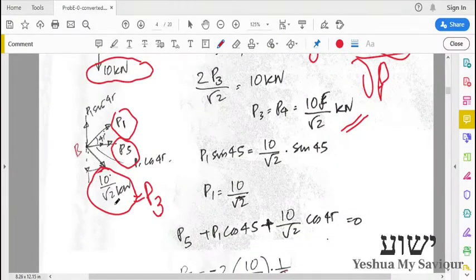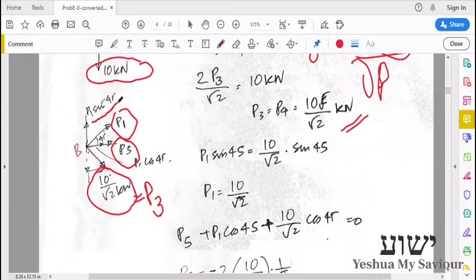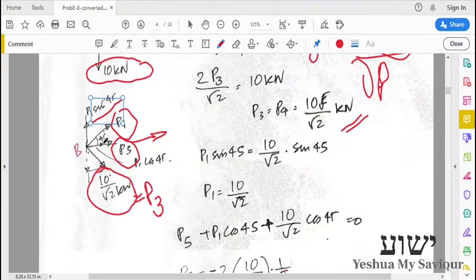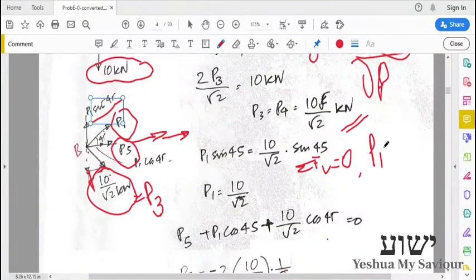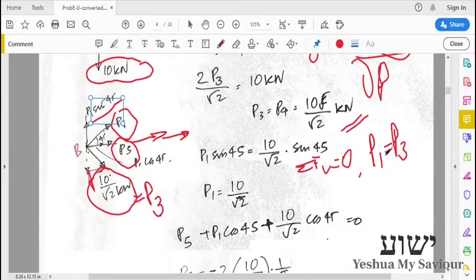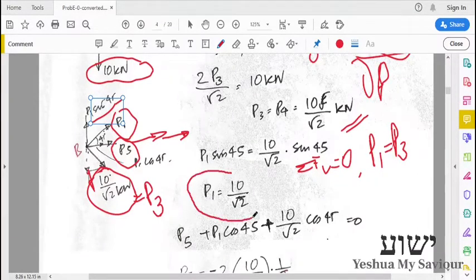Instead, I will go for the slow method. We have P3 equal to 10/√2. I can resolve P1 into two components: P1 sine 45° and P1 cos 45° in this direction, and P5 will have one component. I can resolve P3 into two components in this direction. If I take ΣFv, the vertical force balance equal to zero, we will get P1 is equal to P3. So P1 = 10/√2.